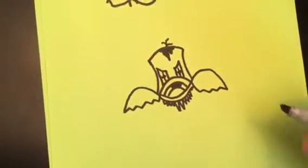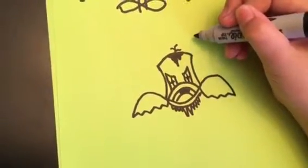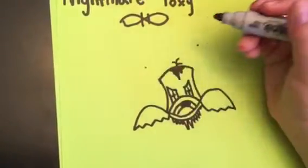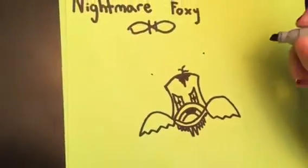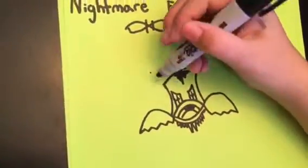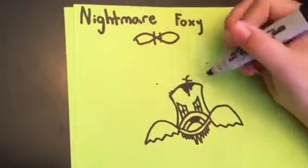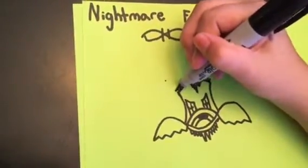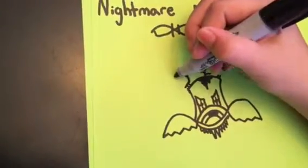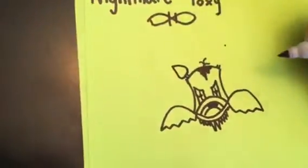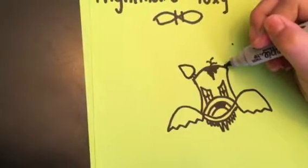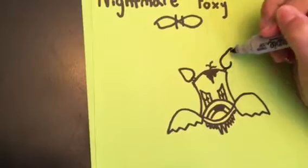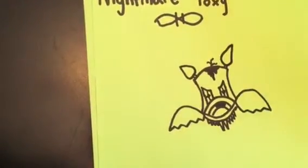And then we're going to start with the ears. I'm going to do a point right here and right about there. So we're going to do little lines like this, then come up, touch the point, and come back down. And we do that with the other side: come up, touch the point, and come back down. Perfect.